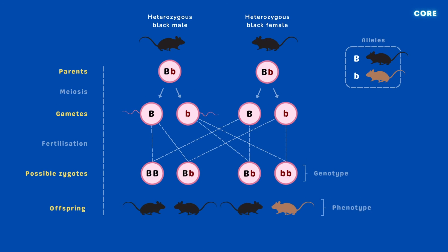Let's apply all the terms we just learned to an example. Here we're looking at the inheritance of coat colour in mice, where the dominant allele, uppercase B, produces black fur, and the recessive allele, lowercase b, produces brown fur. When two heterozygous black mice are crossed, the resulting offspring will inherit one allele from each parent. The possible combinations are BB (homozygous dominant), two times Bb (heterozygous), and bb (homozygous recessive). The dominant allele determines the phenotype, resulting in a phenotypic ratio of 3:1 for black to brown mice in the F1 generation.